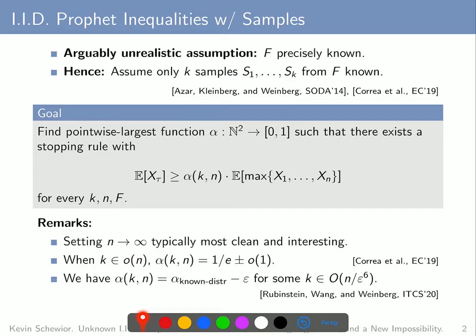On the other end of the spectrum, it was shown at last year's conference by Rubinstein, Wang and Weinberg that the guarantee of roughly 0.745 from the known distribution setting can already be approximately achieved with a linear number of samples. So in other words, the setting when the number of samples is sublinear in n is essentially understood. Therefore, the most interesting setting is the linear regime — namely when the number of samples is linear in n — and we will from now on focus on this linear regime.